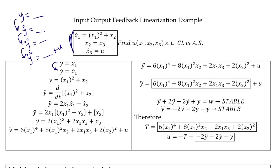Since there is some structure in the system, we can see the input is being passed through like integrators three times. At the end of the third integrator we can see the output being x1, so reason suggests it would be smart to pick x1 as the virtual output signal. Let's try it — there is nothing wrong with trying that.